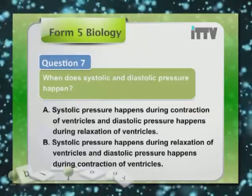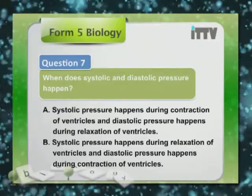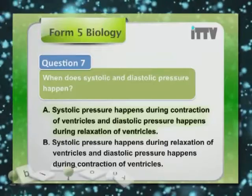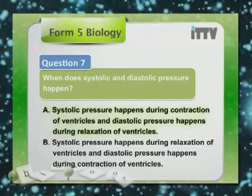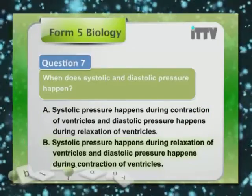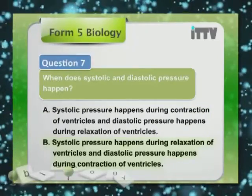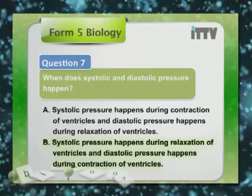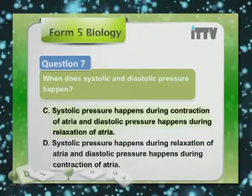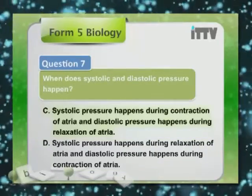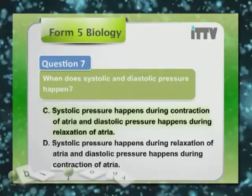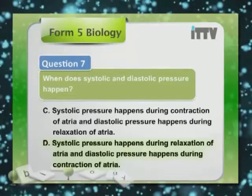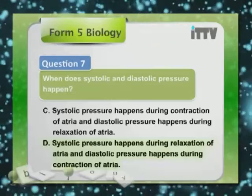Question 7: When does systolic and diastolic pressure happen? A. Systolic pressure during contraction of ventricles, diastolic pressure during relaxation of ventricles. B. Systolic pressure during relaxation of ventricles, diastolic pressure during contraction of ventricles. C. Systolic pressure during contraction of atria, diastolic pressure during relaxation of atria. D. Systolic pressure during relaxation of atria, diastolic pressure during contraction of atria.